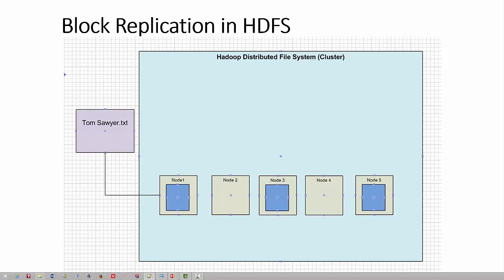Data resilience is built into Hadoop Distributed File System. The mechanism to achieve data resilience is called block replication. When a file is written, it is saved to HDFS into one or more blocks — typically 64 or 128 MB blocks. When a block is written to HDFS, as shown here in blue, HDFS copies those blocks onto various other nodes in the cluster.